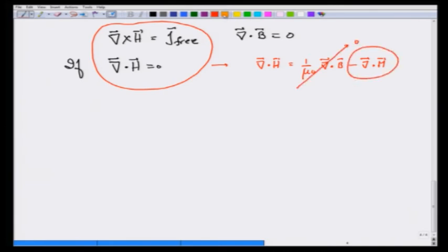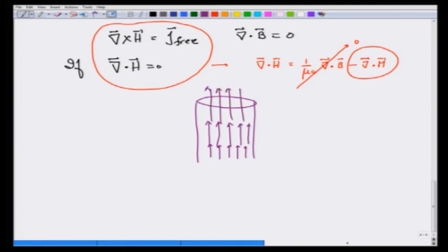Why? Suppose I have any material and I have M varying, for example it could be shown by the length of the arrow. This length then could be increasing, it could be even more out here. So as I am moving in this direction, that component of M is increasing and divergence of M is not zero.